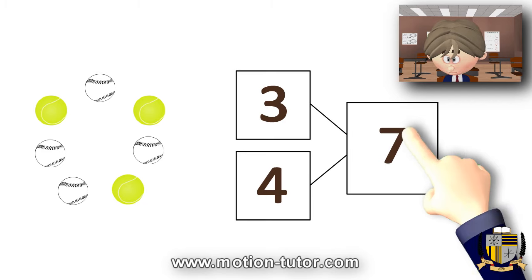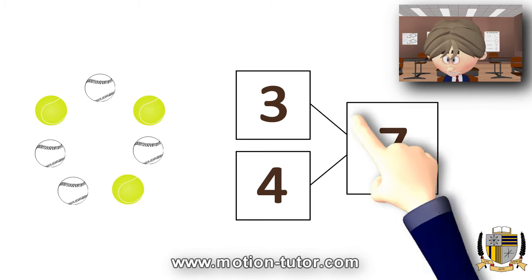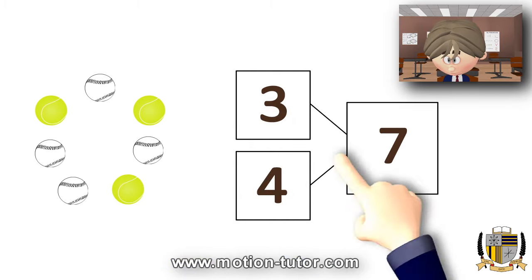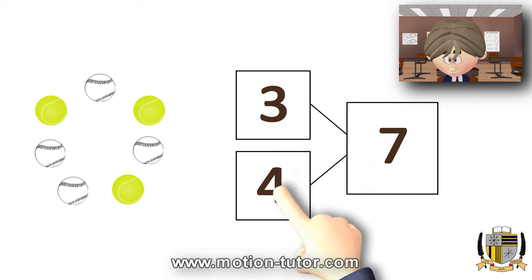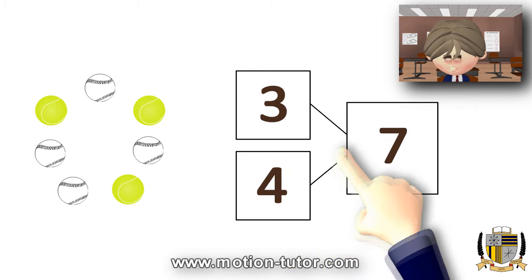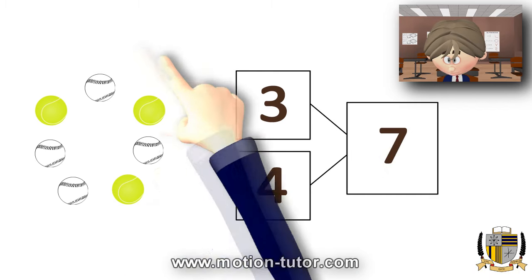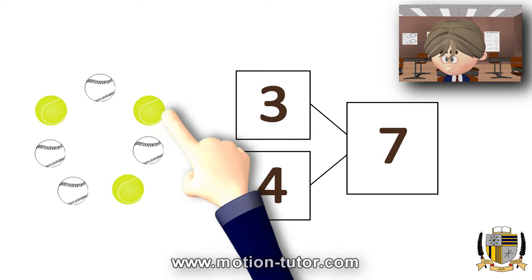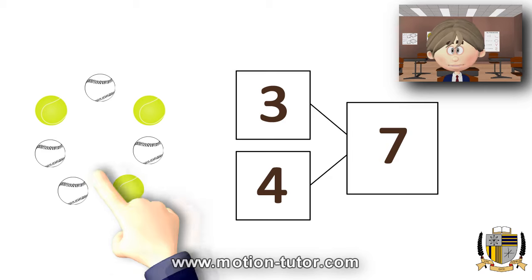This seven over here represents the whole thing, the whole group of balls here. So if we look carefully, this seven is made up of three and four. That makes the seven. This group of balls is made up of three tennis balls and four baseballs.